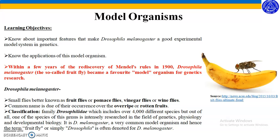Within a few years of the rediscovery of Mendel's rules in 1900, Drosophila melanogaster, the so-called fruit fly, became a favorite model organism for genetics research. Drosophila melanogaster is a small fly also known as fruit flies, pomace flies, vinegar flies, or wine flies. The common name is due to their occurrence over overripe and rotten fruits. These organisms belong to the family Drosophilidae, which includes over 4000 different species, but Drosophila melanogaster is the most intensely researched species in genetics, physiology, and developmental biology.